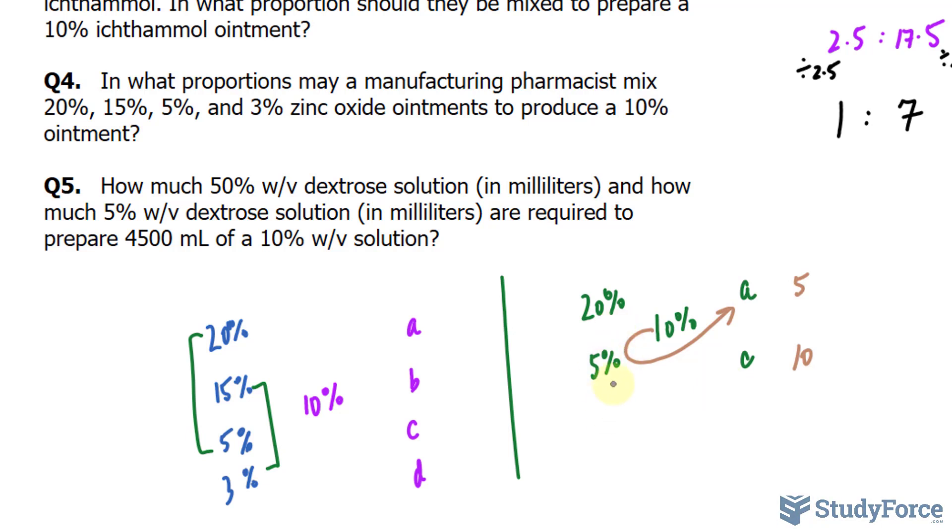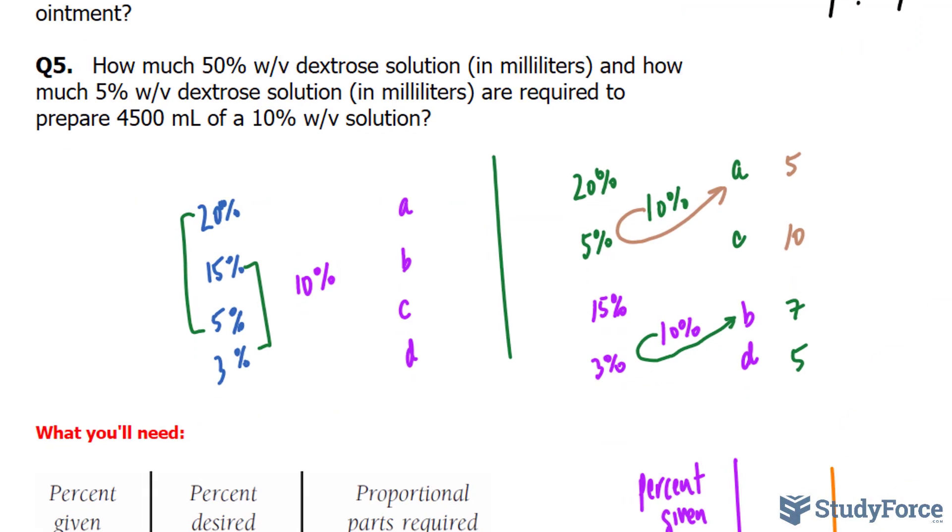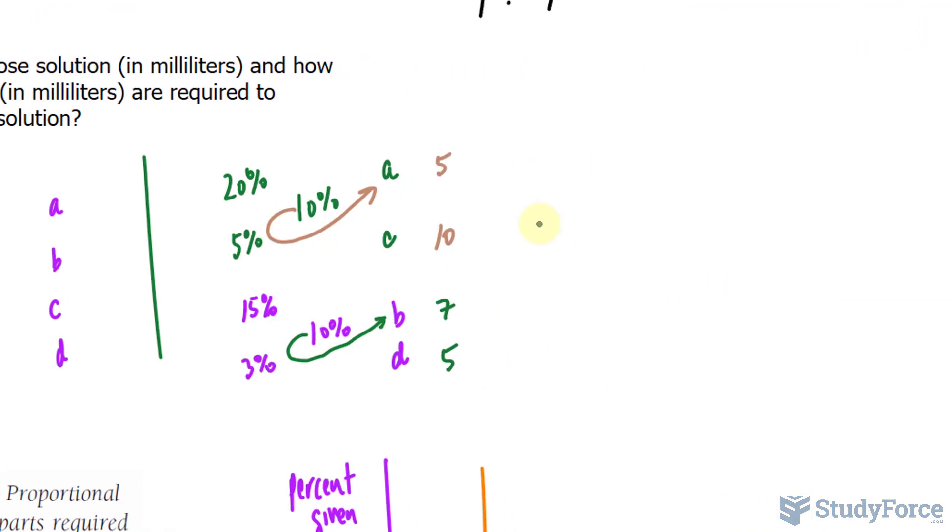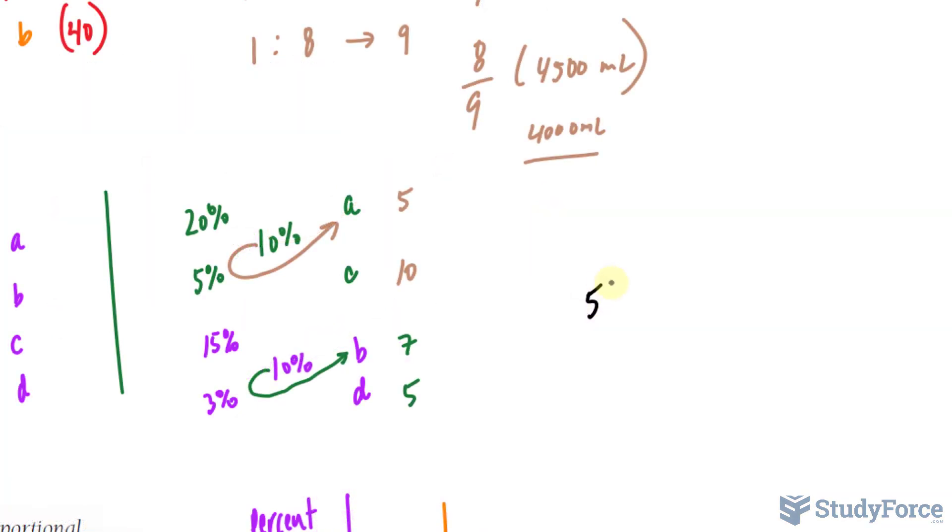Now, I will do the next one, which is the 15% and the 3% being mixed. Our desired is 10%. We have the letters B and D. 15 minus 10 is 5, so 5 parts of D, 5 parts of the 3%. And 10 minus 3 makes 7. So writing these values down as a ratio, we have 5 to 7. So that's A, B, C, and D.